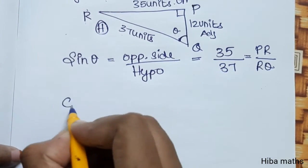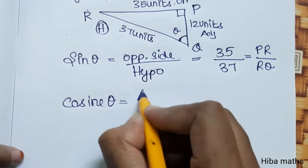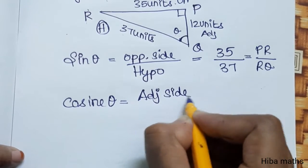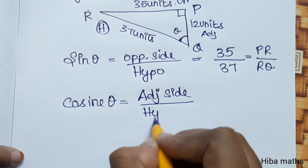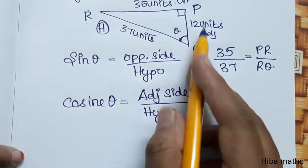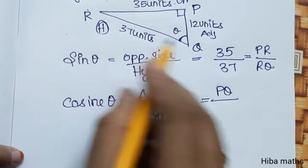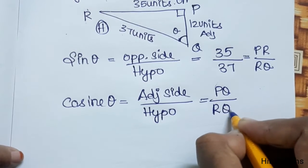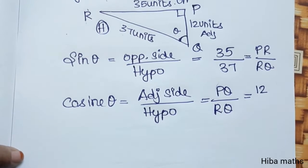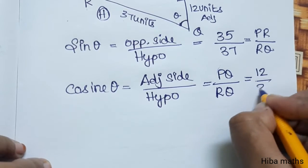So this is cosine. Cosine theta equals adjacent side by hypotenuse. The adjacent side is PQ and the hypotenuse is RQ. The PQ value is 12 and RQ is 37, so cosine theta equals 12 by 37.